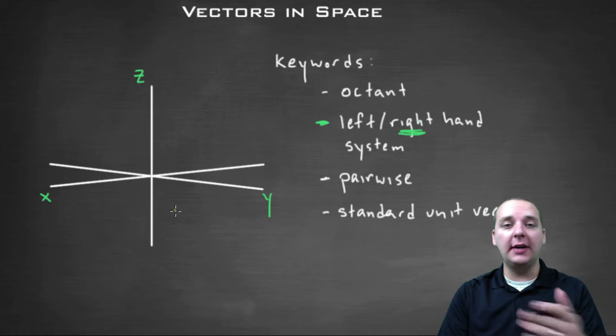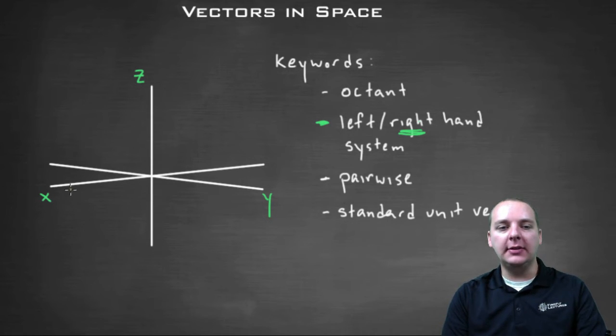Now what's positive and negative? The positive x values are here, the negatives are back here. Positive y values are here coming towards you, the negative y values are away from you. The positive z values are up, the negative z values are down, so just remember that as well.